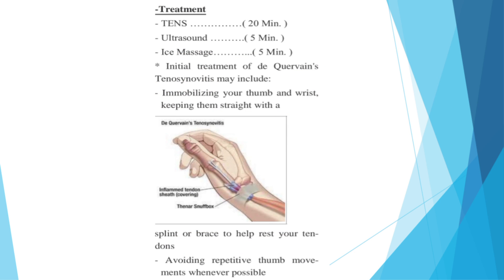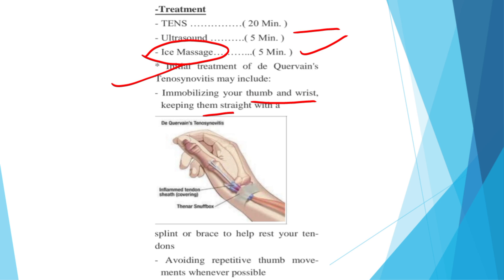For treatment, apply ice for 20 minutes. Ultrasonic therapy can be used for 5 minutes, and since it is an acute condition, ice massage can be applied for 5 minutes. Initial treatment includes immobilizing the thumb and wrist, keeping them straight, and avoiding any thumb movement in the acute phase.